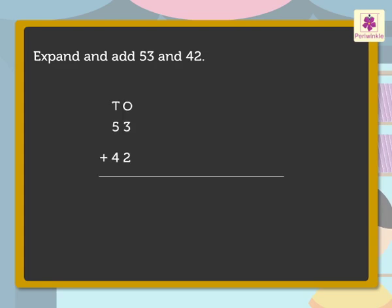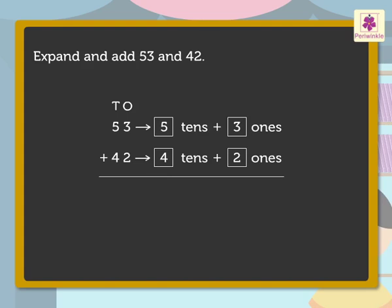To find the total number of pens, we need to expand and add 53 and 42. So first we write the numbers in tens and ones. That is, 53 as 5 tens and 3 ones, and 42 as 4 tens and 2 ones. Now add ones and tens: 3 ones plus 2 ones equals 5 ones, and 5 tens plus 4 tens equals 9 tens.